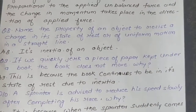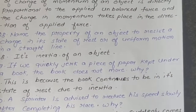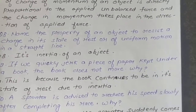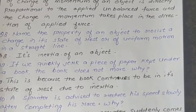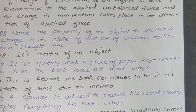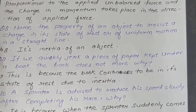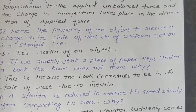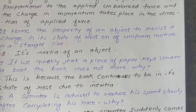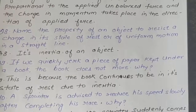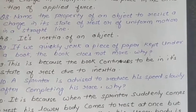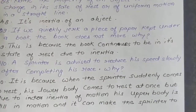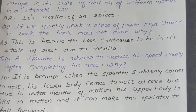Question 9: If we quickly jerk a piece of paper kept under a book, the book does not move. Why? Answer: This is because the book continues to be in its state of rest due to inertia.